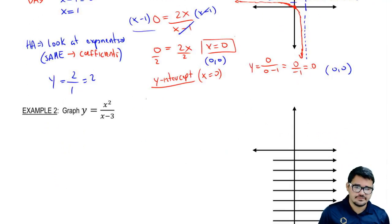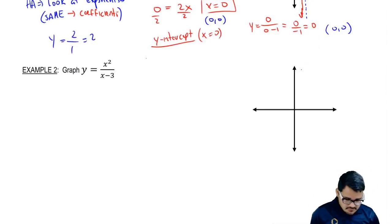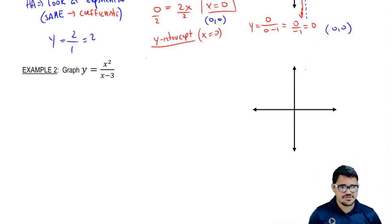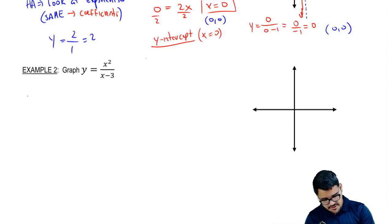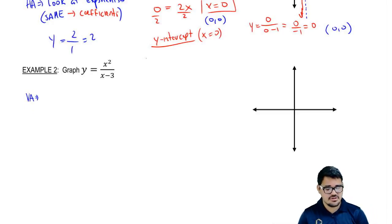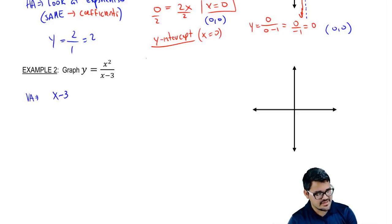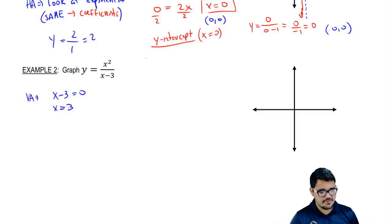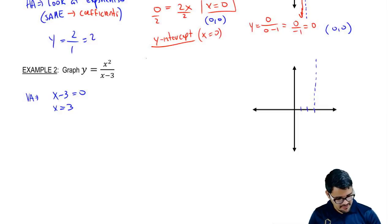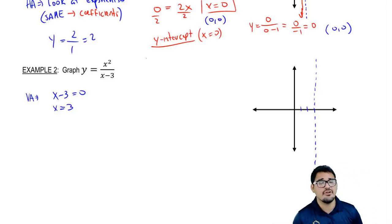Now let's look at example two, which is our last example on this sheet. We're going to do the same procedure, starting with vertical asymptotes. For vertical asymptotes, I just set the bottom equal to 0: x minus 3 equal to 0. I solve for x: x is equal to 3. So I'm going to draw that asymptote at positive 3. I've found my vertical asymptote and now I'm ready to move on to the horizontal asymptote.